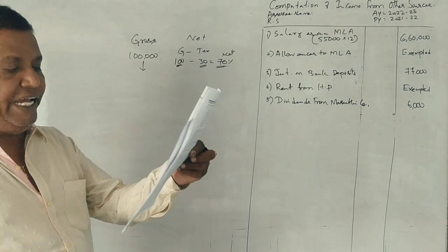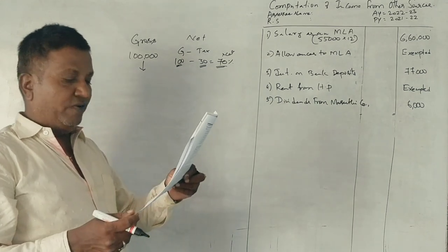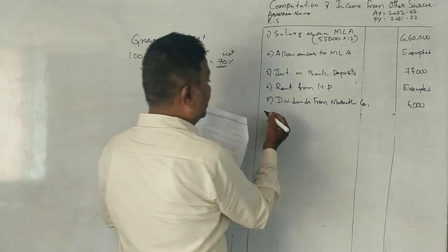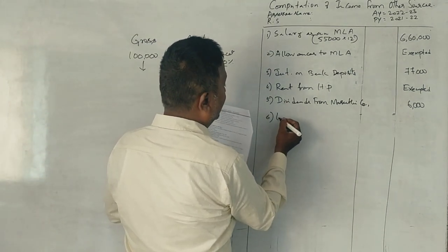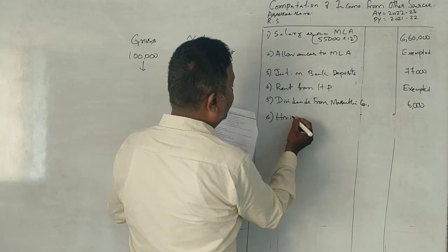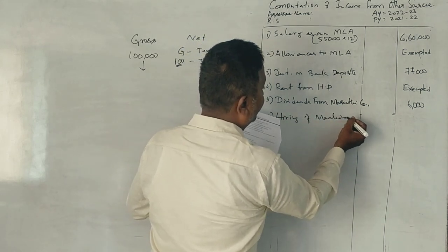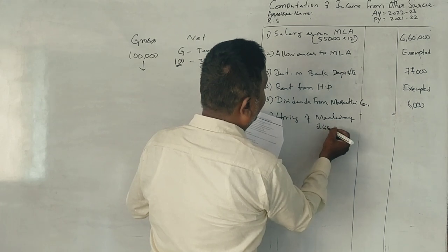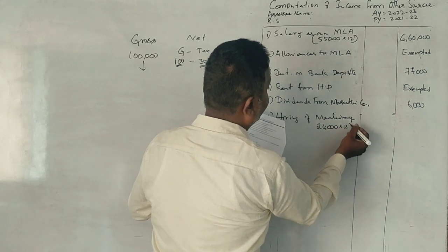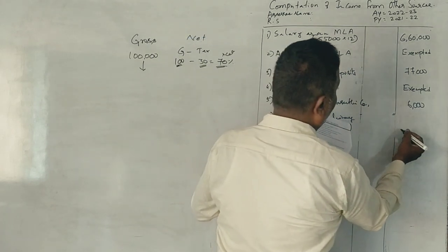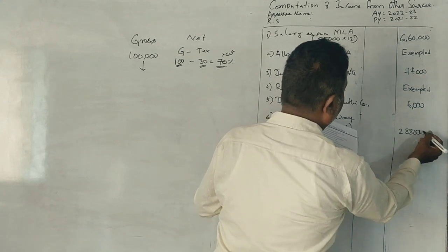Income from letting of hire plant machinery, 24,000 per month. Fully taxable. Hiring of machinery, 24,000 into 12 equals 288,000.